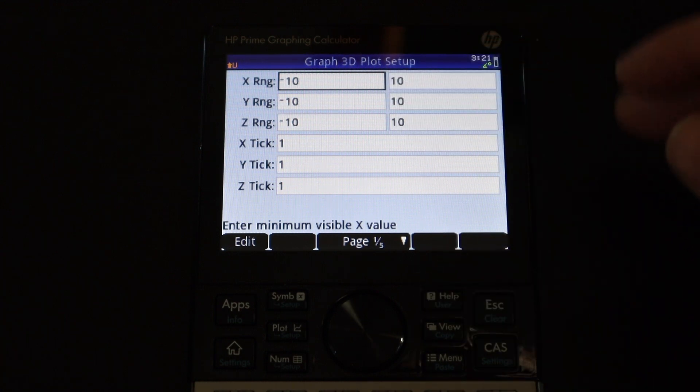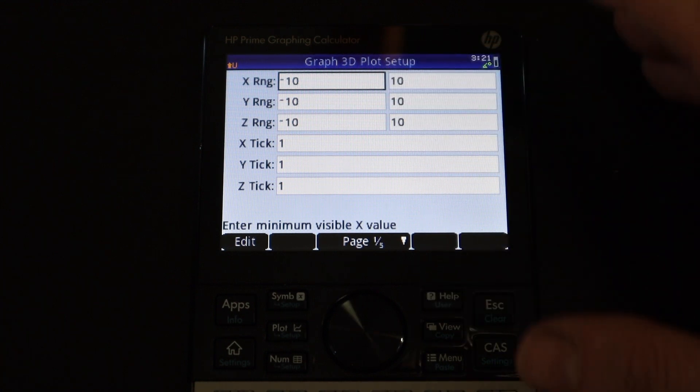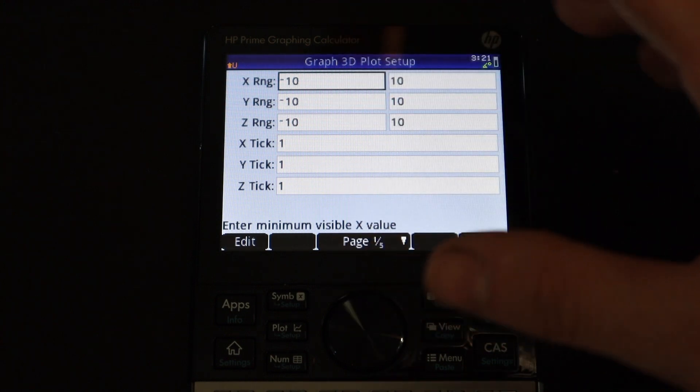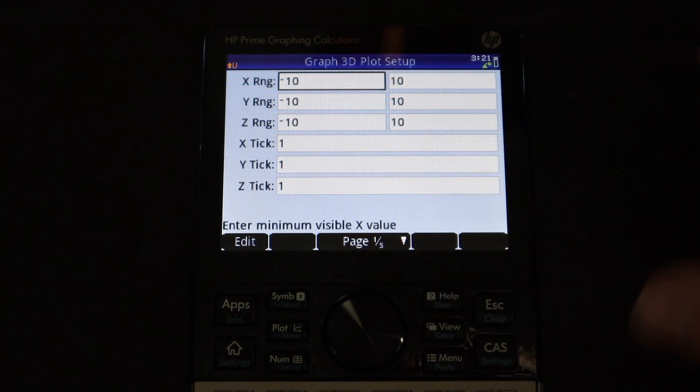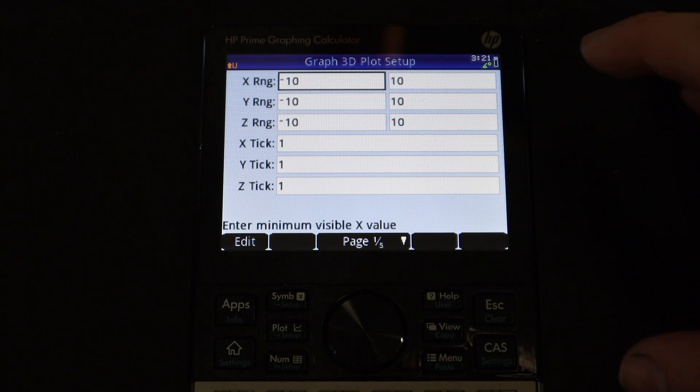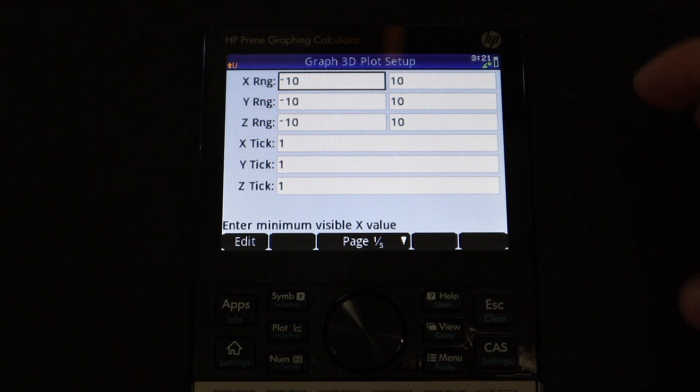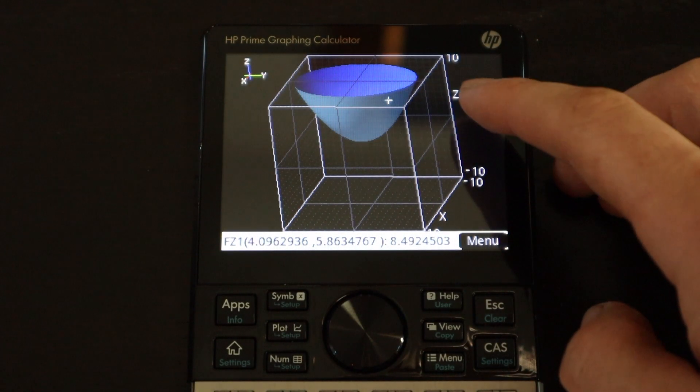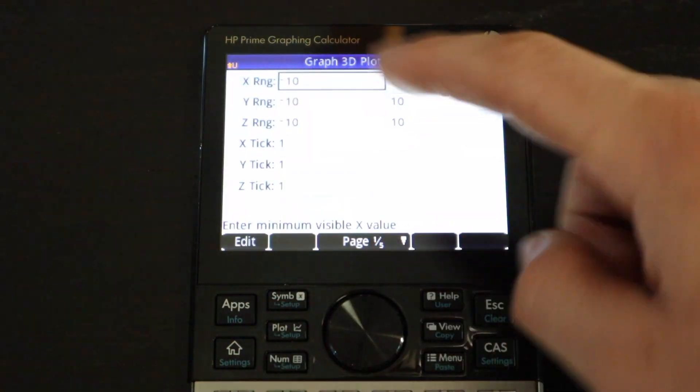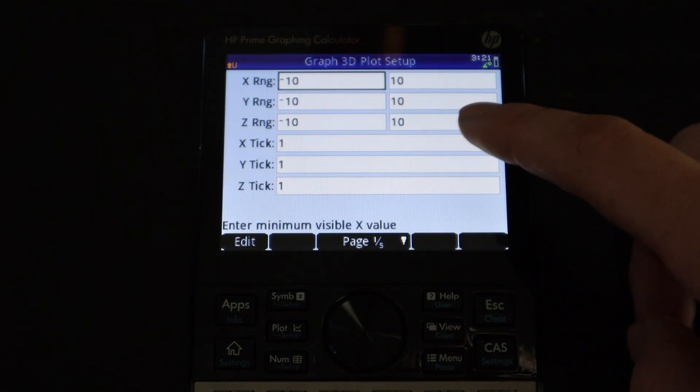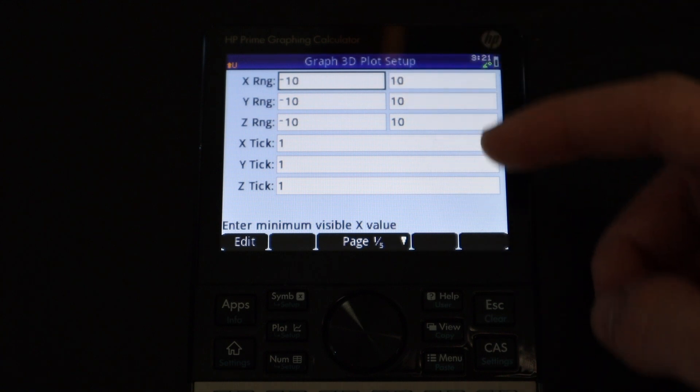you don't know exactly what a function is going to look like. And you graph it and maybe you get a picture that's way too close in or way too far out. And you can't really see the features of the function that well. So, you have to change the viewing window size. But once you graph your function, you kind of have to go back into this window and guess what the right limits should be on the X, Y, and Z axes.